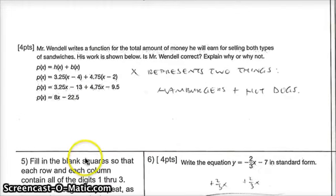I think only a couple of students got this next question right. Mr. Wendell writes a function for the total amount of money he will earn for selling both types of sandwiches. His work is shown below. Is Mr. Wendell correct or not? So h represents the hamburgers, hot dogs, and b stands for burgers. So you're asking can I add these two functions together and then combine like terms and get 8x minus 22.50? Well in the previous problem there, x represents hot dogs and hamburgers. So Mr. Wendell's function is wrong.